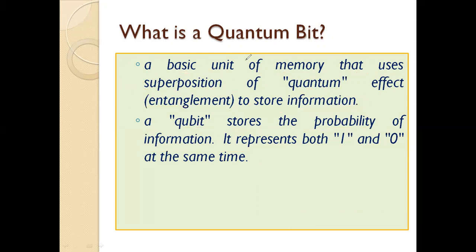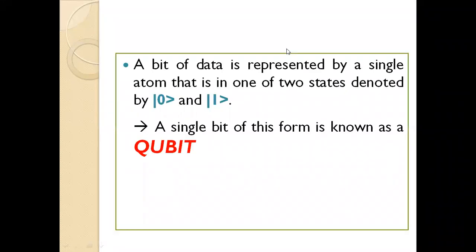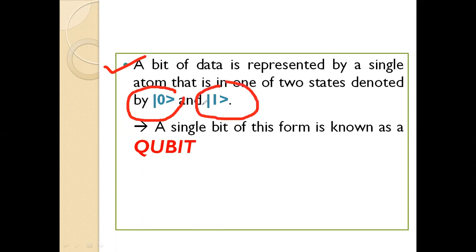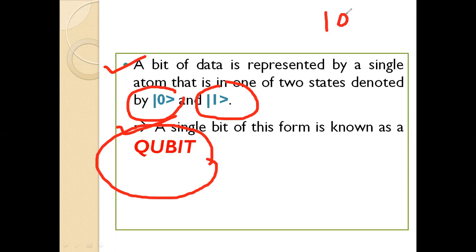A bit of data is represented by a single atom that is in one of two states, denoted by zero and one. One of them is known as the ground state and the other is known as the excited state. A single bit of this form is known as a qubit. As you study quantum computing, become familiar with these two states: ground state and excited state.